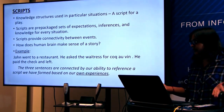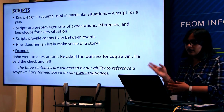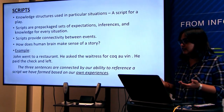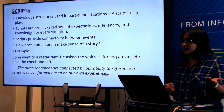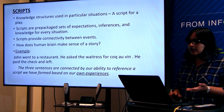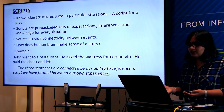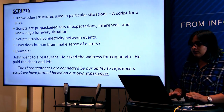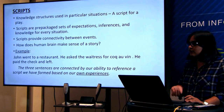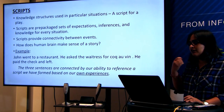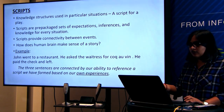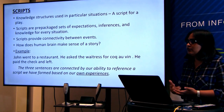Next he talks about scripts. What are scripts? Knowledge structures used in particular situations — like a script for a play, a script for a knowledge structure. Scripts are prepackaged sets of expectations, inferences, and knowledge for every situation. They provide connectivity between events. How does the human brain make sense of a story? It connects to the scripts — the prepackaged knowledge we have through our experiences, watching movies, anything — and we combine it to come up with what context to apply in that situation.